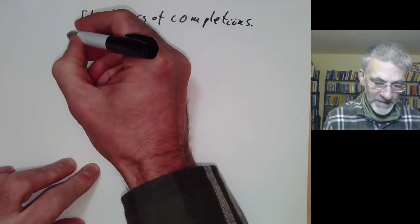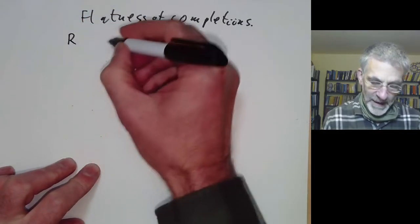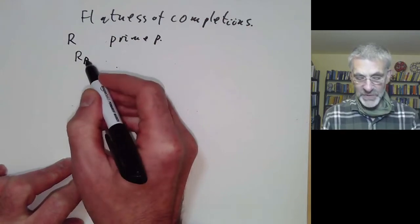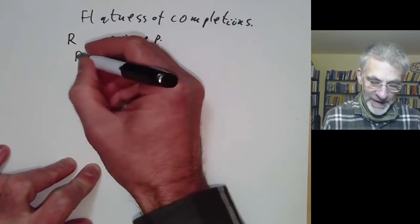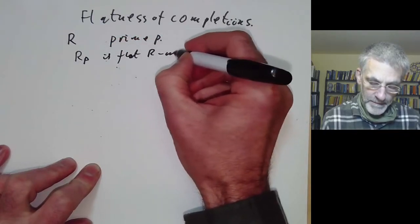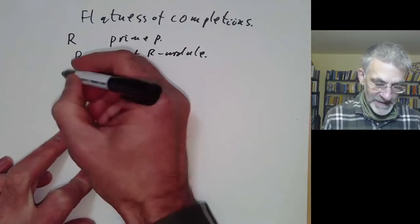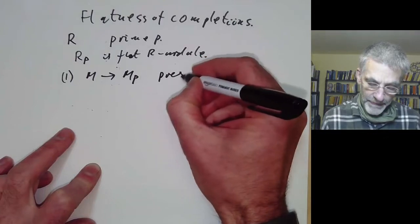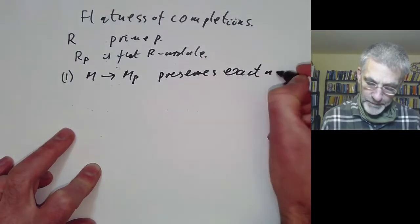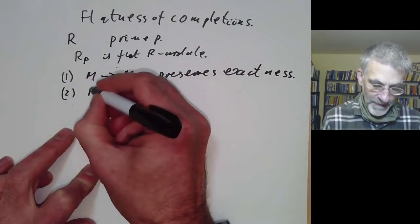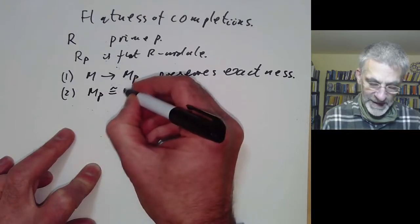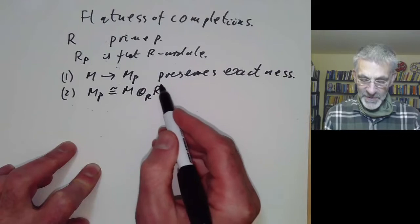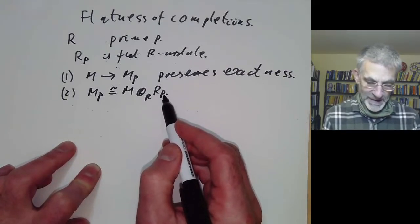To motivate this, we first recall that if we have a ring R and a prime ideal P, we can construct the localisation R_P, where we invert everything not in P. We showed that R_P is a flat R-module, proved in two steps. First, if we have a module we can also localise it, and the operation taking M to M_P preserves exactness. Second, the localisation of M at P is naturally isomorphic to M tensored with R_P. These two facts combined show that tensoring with R_P preserves exactness, so R_P is flat.